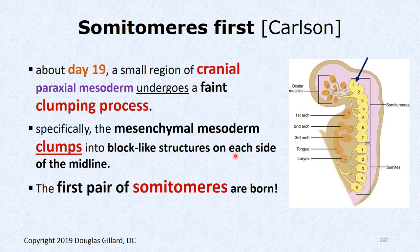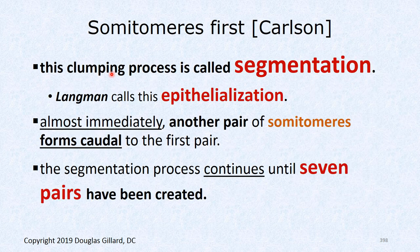After the somatomeres are done, the first somite forms — it's a sequential time process. Somatomeres are born first, up in the cranial region. Langman calls this clumping process epithelialization, which other authors don't use. Langman is a board of chiropractic examiners book, so if he says epithelialization it could show up on the boards.